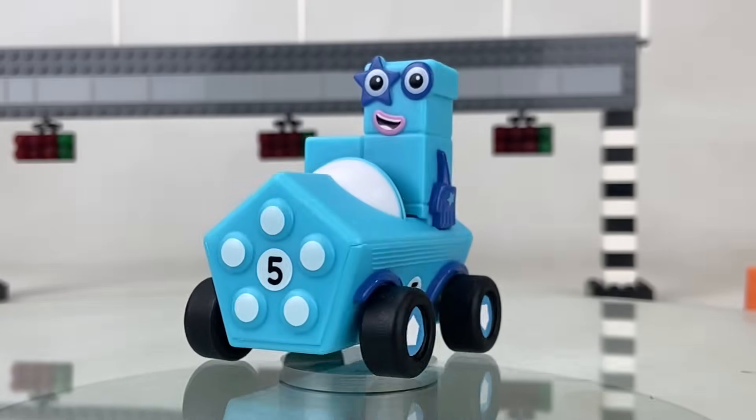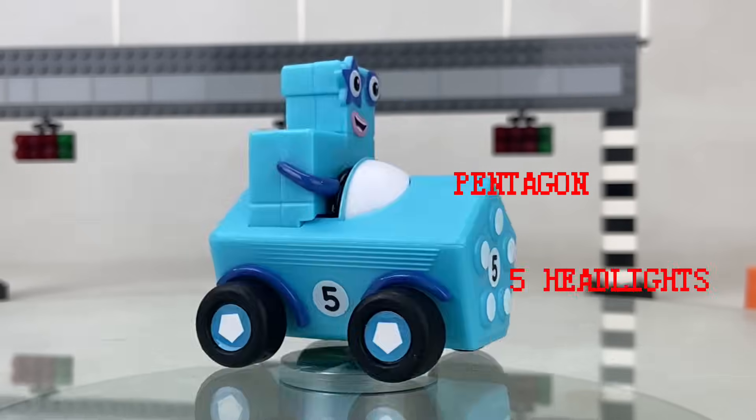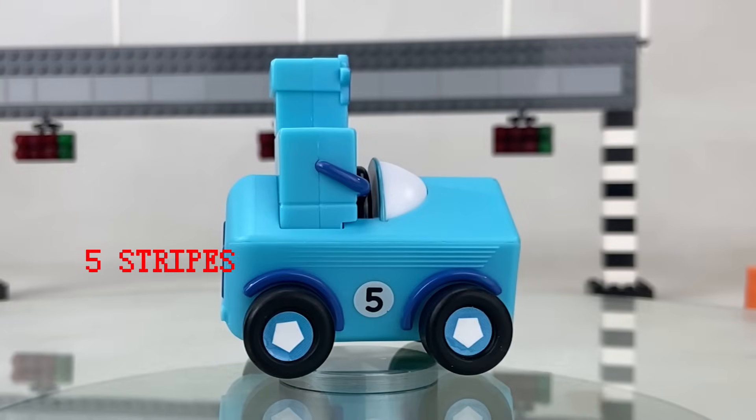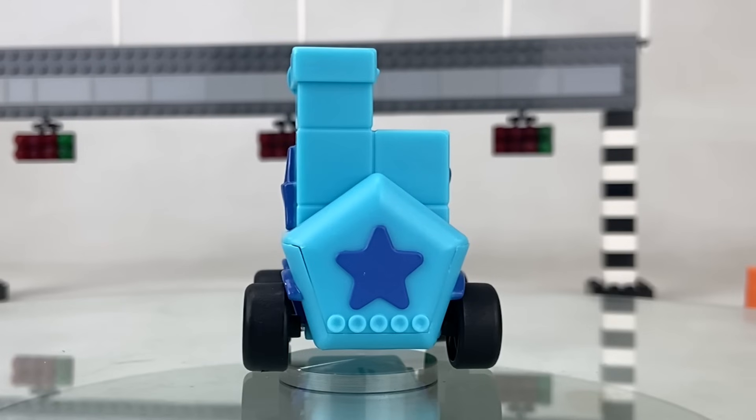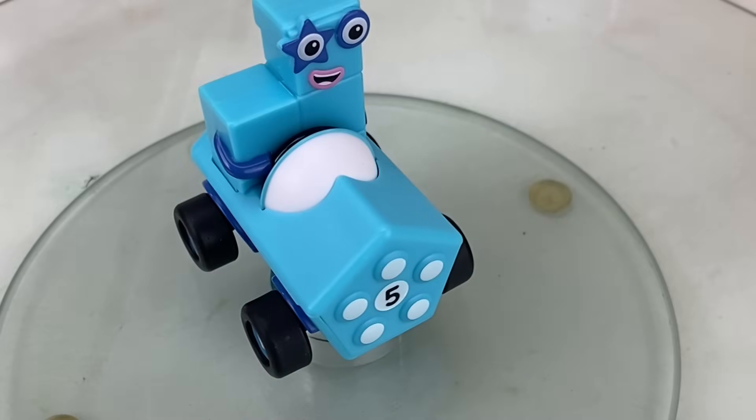Our last racer, driver number five, is in her blue car. Looks like her car has five sides as well, making a pentagon. It also has five headlights with five stripes at the sides. The wheels also have the pentagon design. The back of the car has a large star shape with five points and five exhaust pipes that gives it lots of power. Can five win this race?